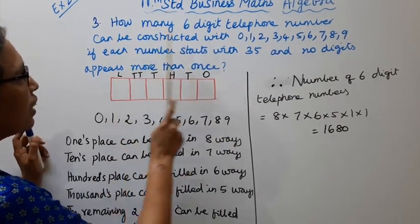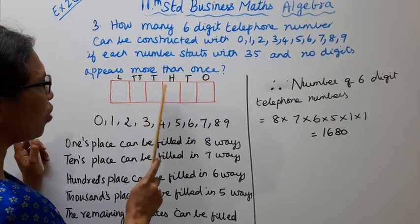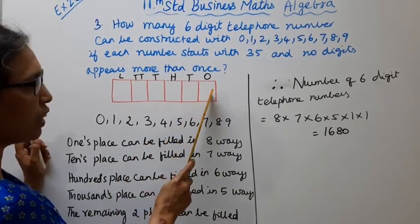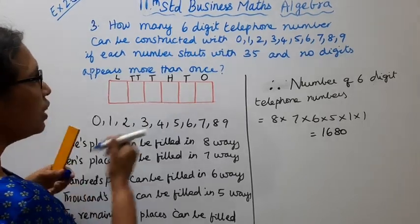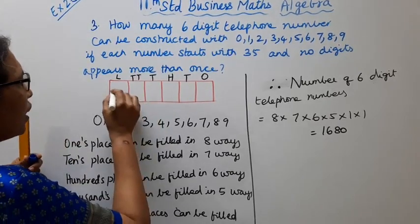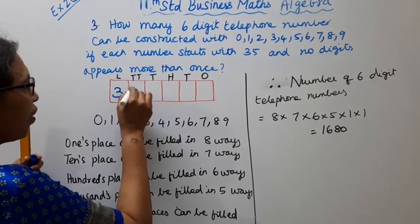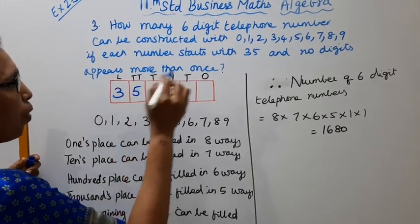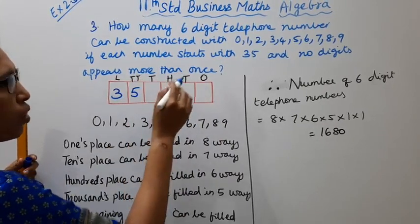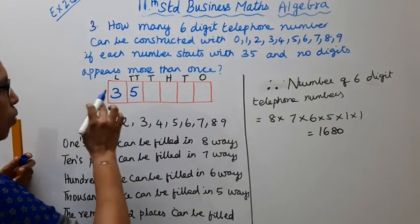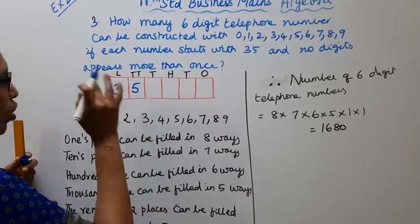We have a 6-digit telephone number with positions 1, 2, 3, 4, 5, 6. The number starts with 35 — so positions 1 and 2 are fixed as 3 and 5. Since 3 and 5 are already used, no digit appears more than once.